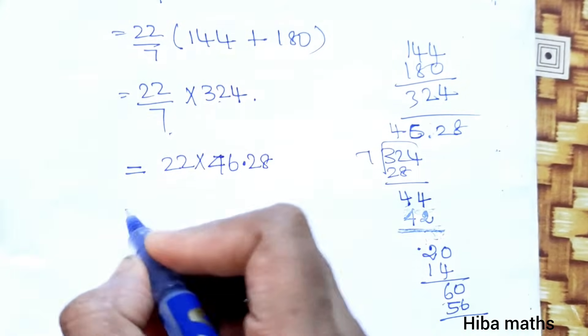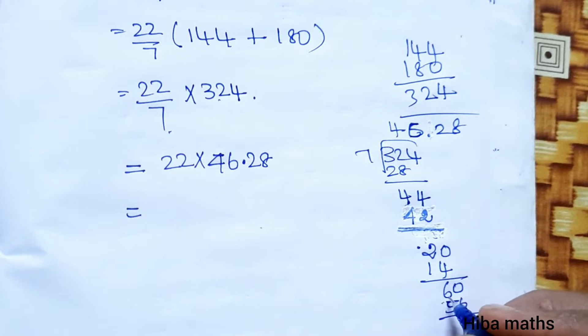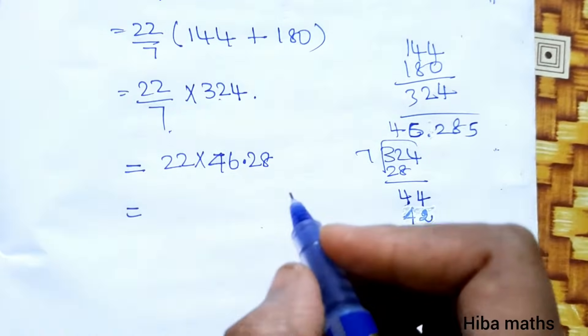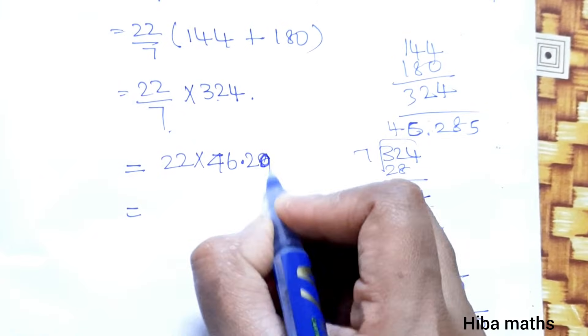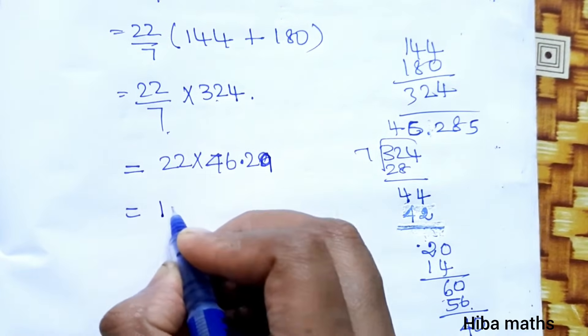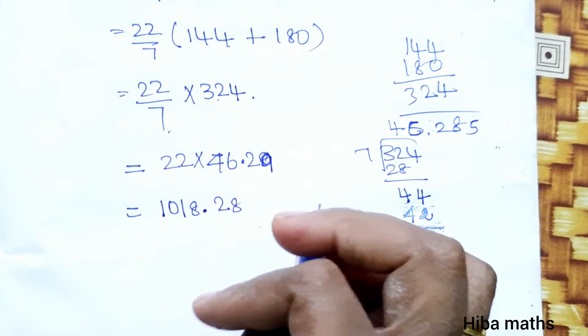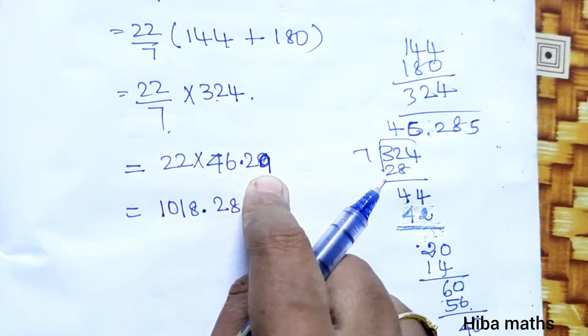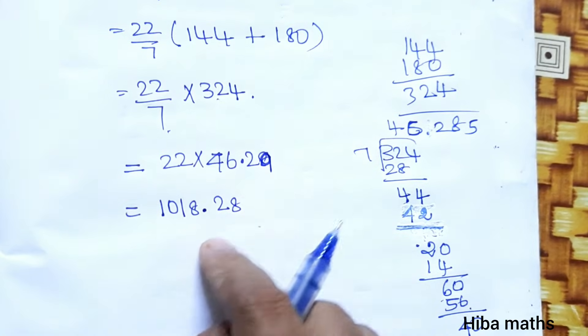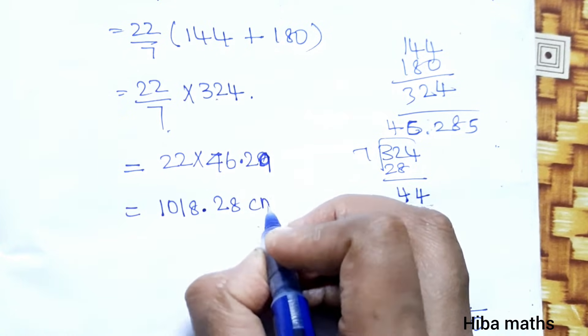Continuing the calculation: 22 times 46.28 equals 1018.28. So the outer surface area is 1018.28 square centimeters.